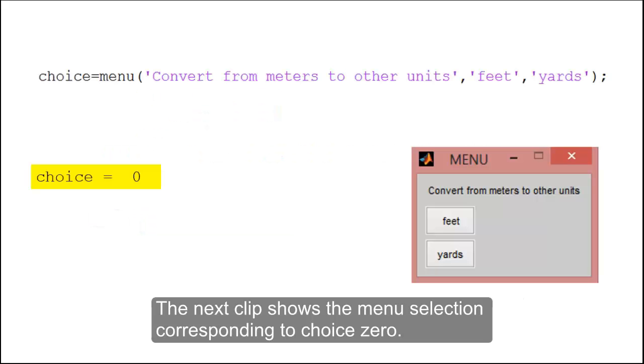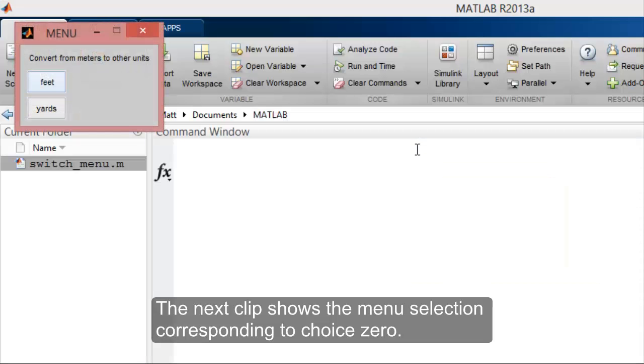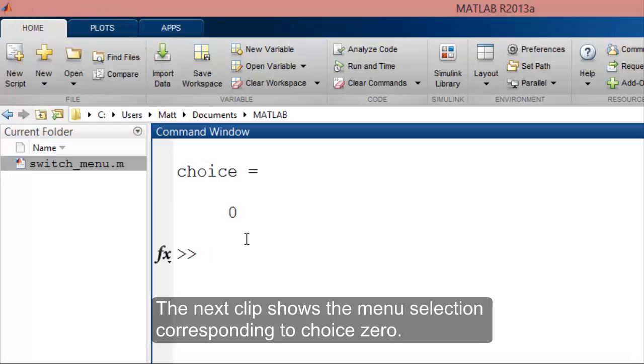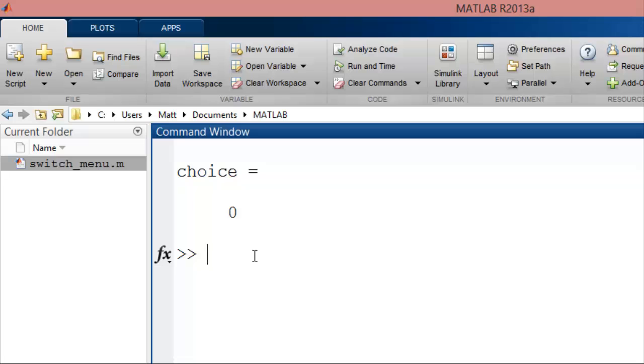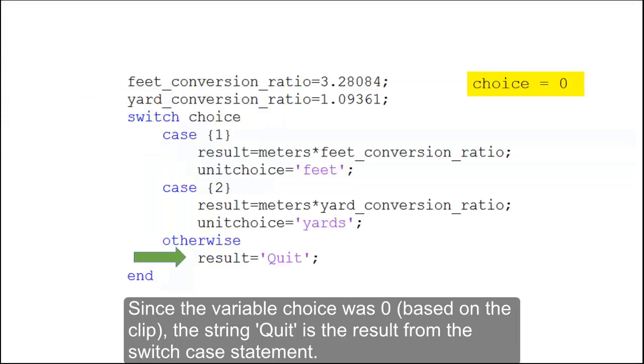The next clip shows the menu selection corresponding to choice zero. Since the variable choice was zero, the string quit is the result from the switch case statement.